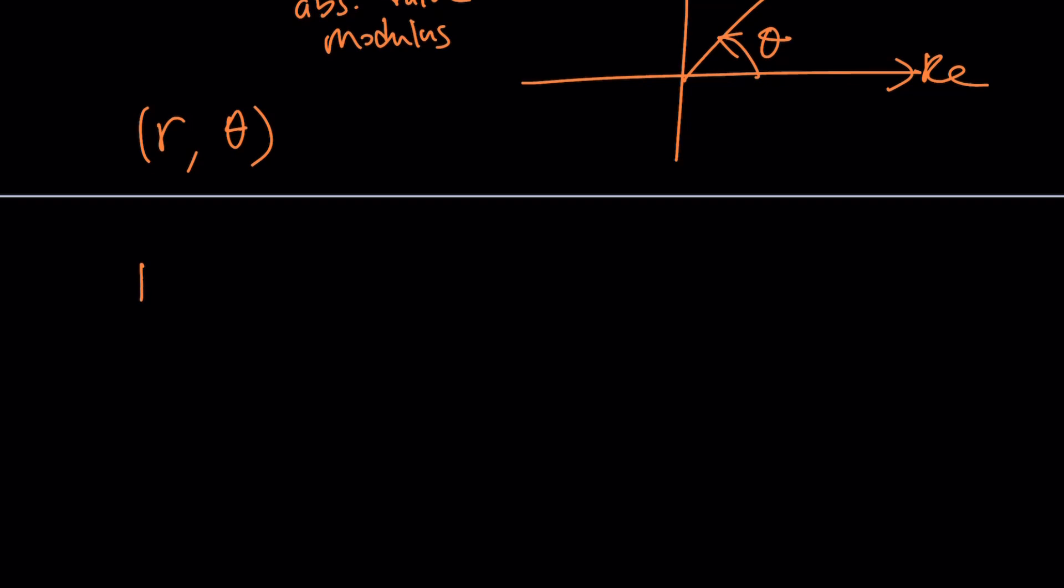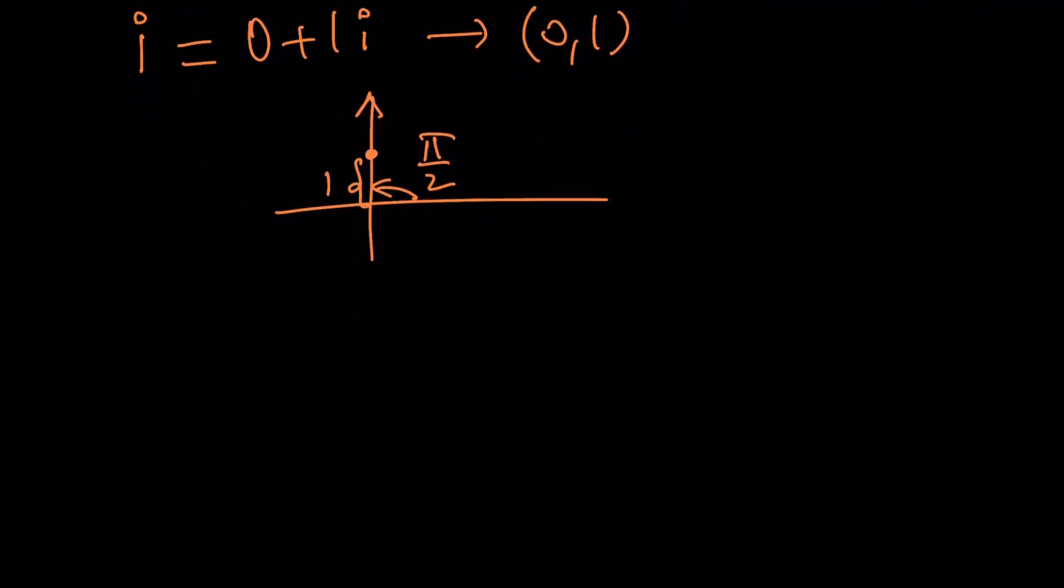So we have i as our complex number. As you know, i can be written as 0 plus 1i. So the coordinates are going to be 0 comma 1. If you think about 0 comma 1, it's going to be placed here. So its modulus is going to be 1. And the angle it makes is going to be pi over 2. So in other words, i can be written as 1, which is the modulus, times e to the power i times theta, which is pi over 2.